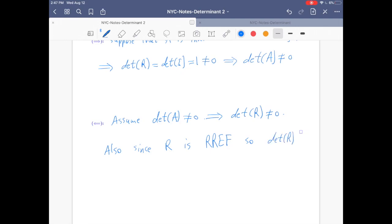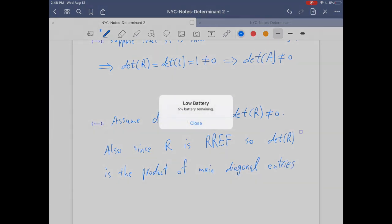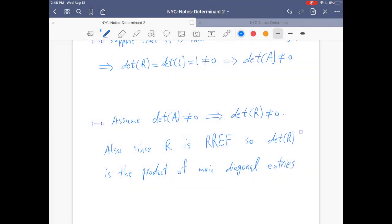so det(R) is the product of main diagonal entries. At the same time, we know det(R) is not zero.